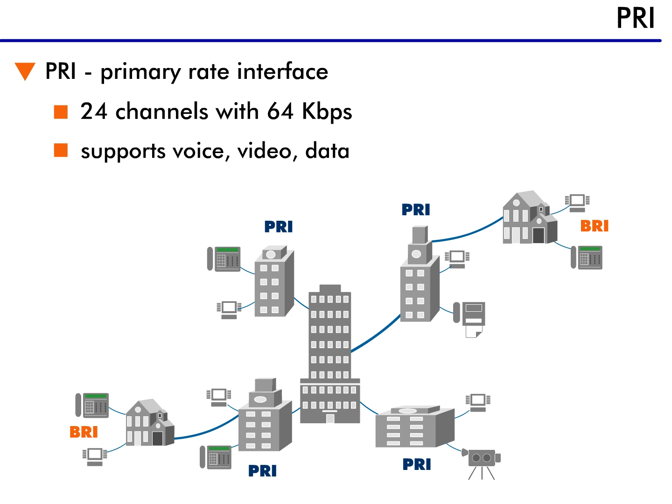Another type of ISDN service is a primary rate interface, or just PRI. PRI is almost identical to a BRI, except that it has extra bandwidth channels. The PRI connection offers a total of 24 separate channels, each at 64 kilobits per second.